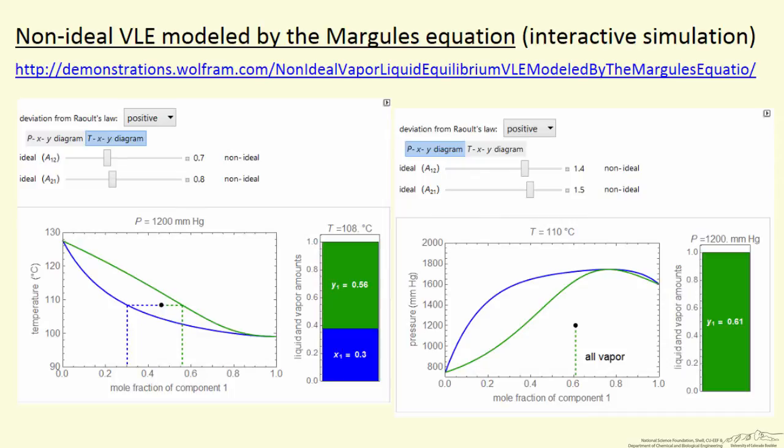I'm going to describe briefly an interactive simulation that models non-ideal vapor-liquid equilibrium using the Margules equation. The simulation is located on the Wolfram site, and I've indicated here its location.